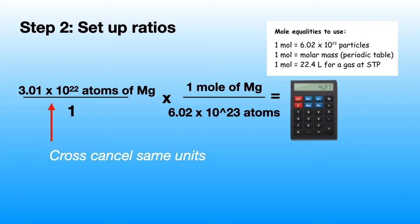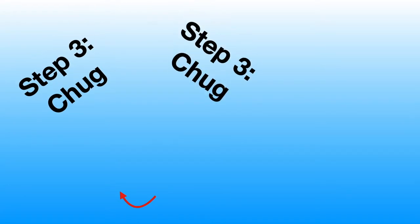Before moving on to step 3, don't forget to cross-cancel same units. This is a quick way to check if you have the correct units you are looking for in the end.